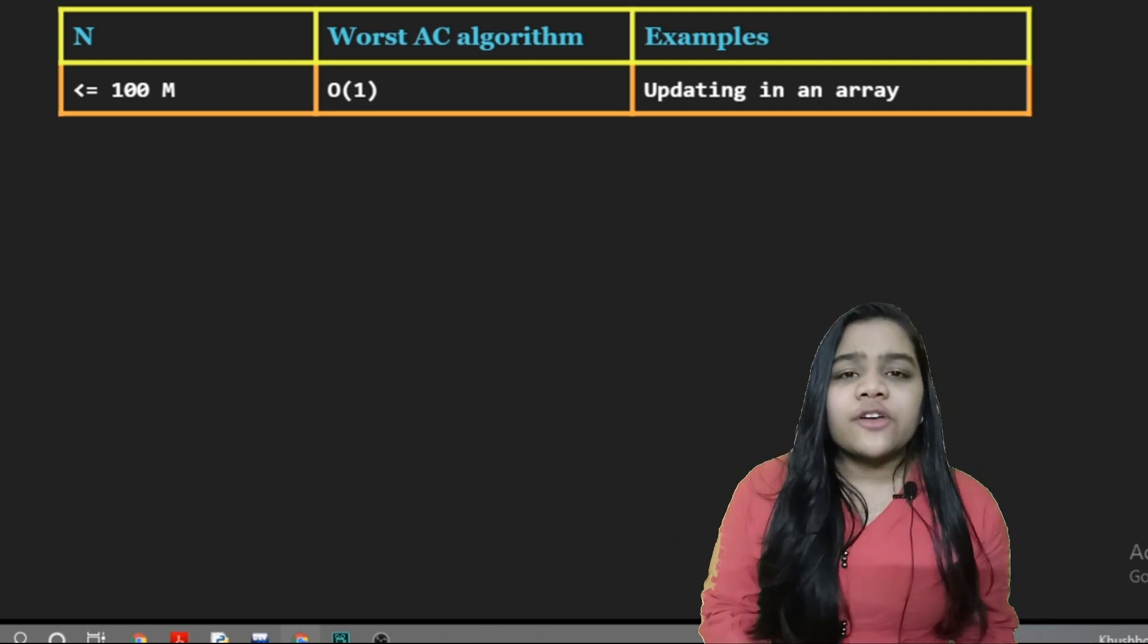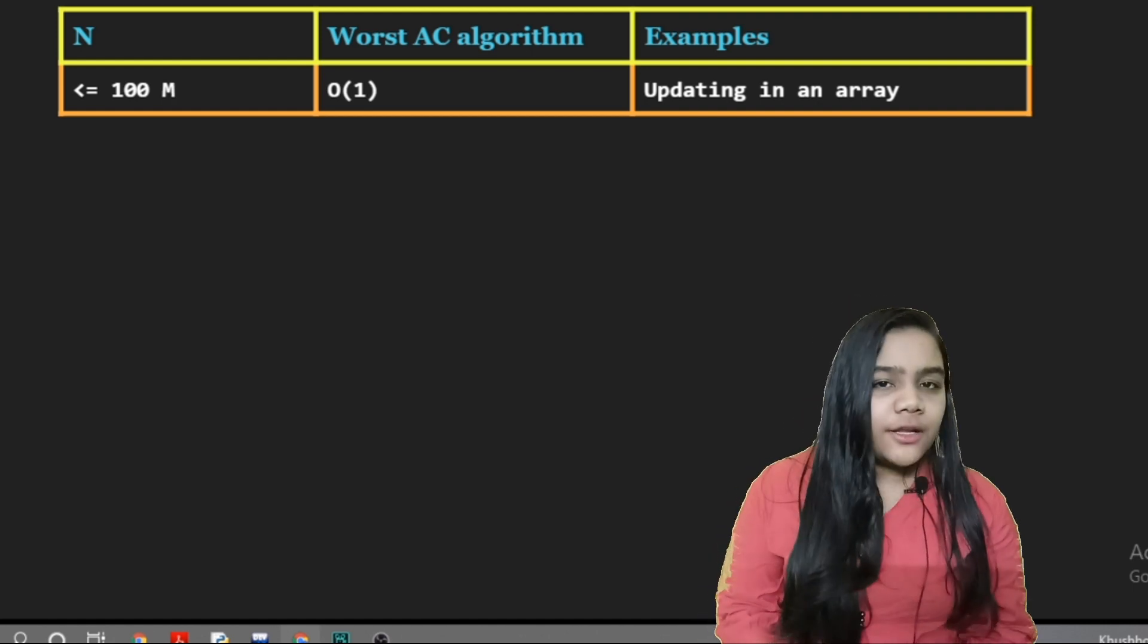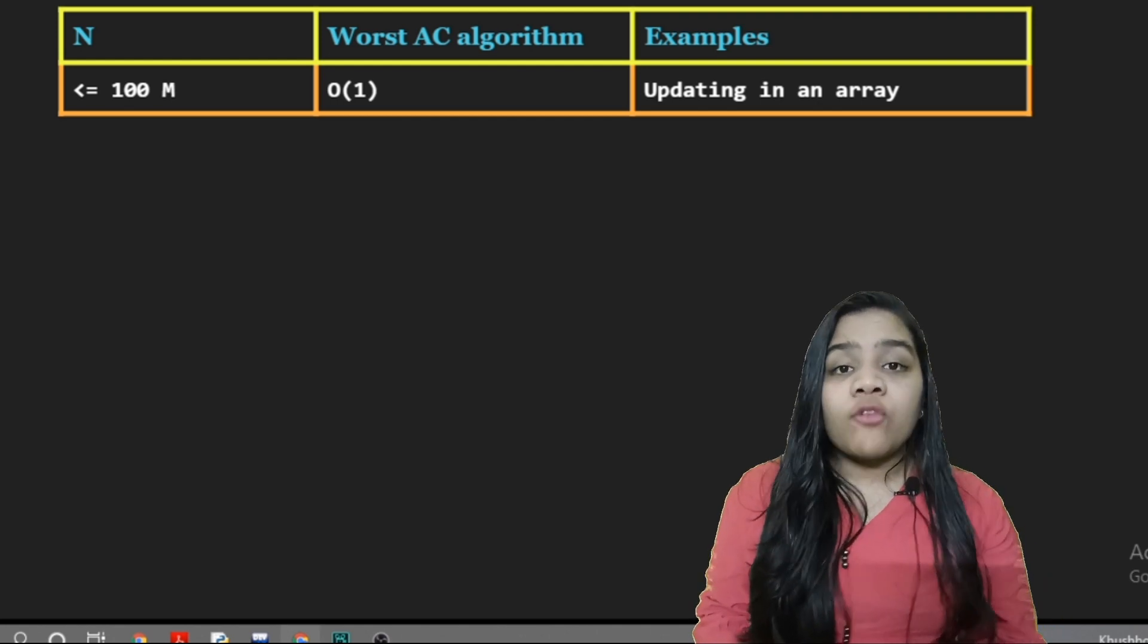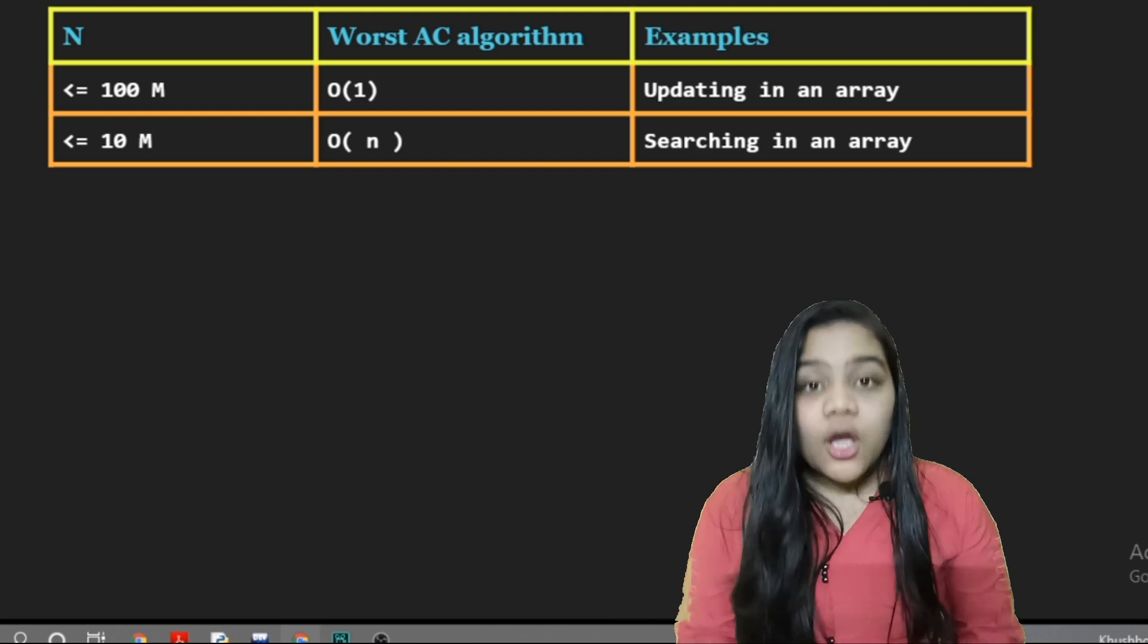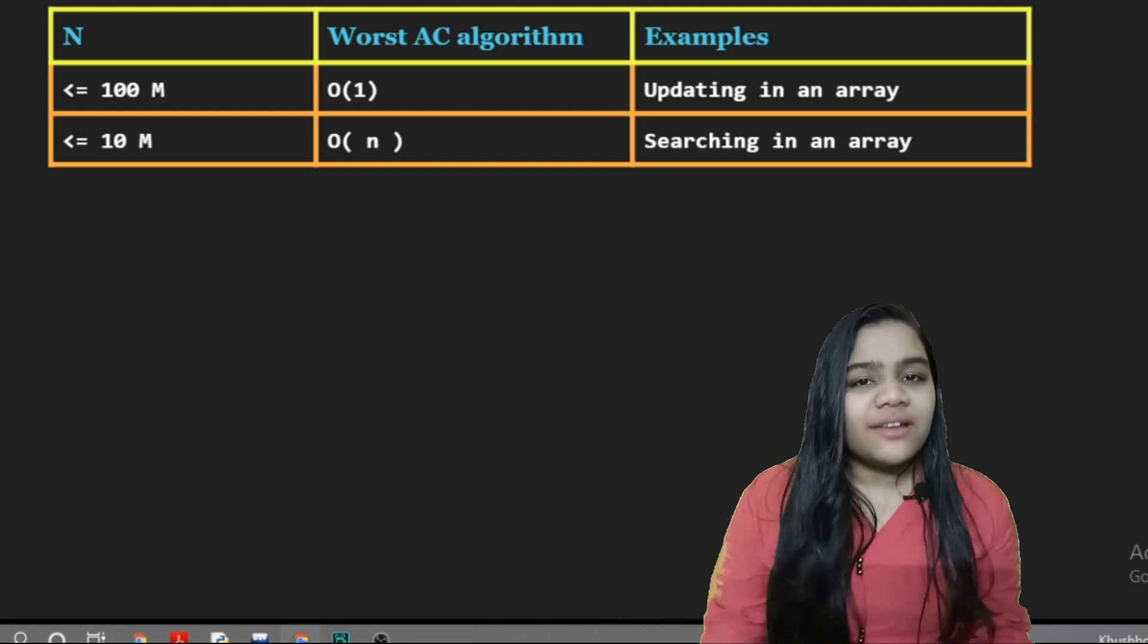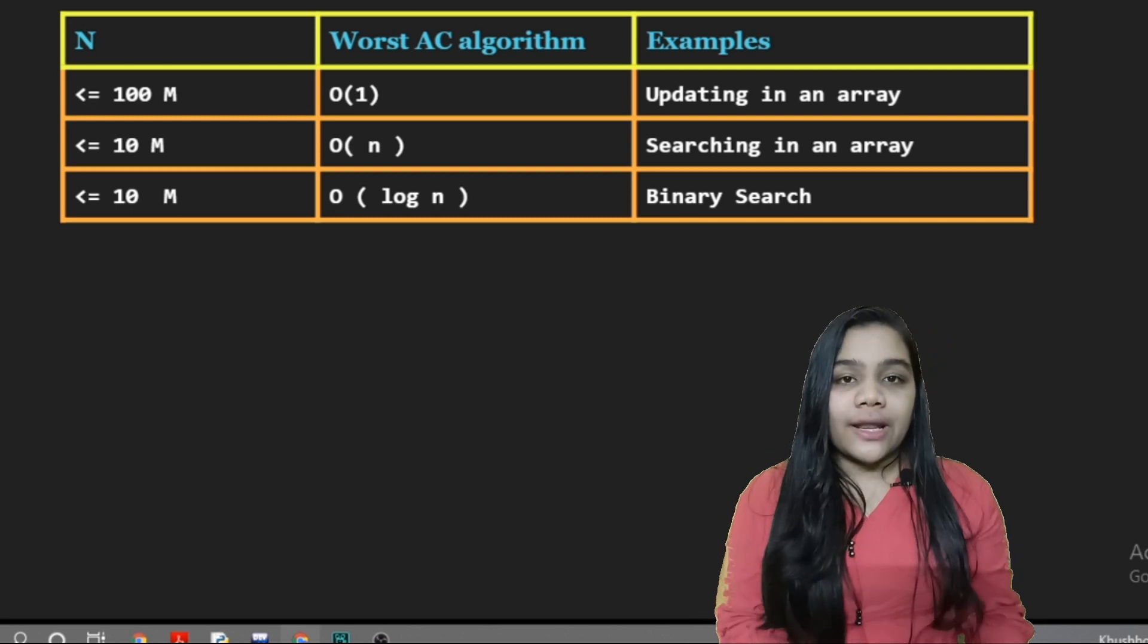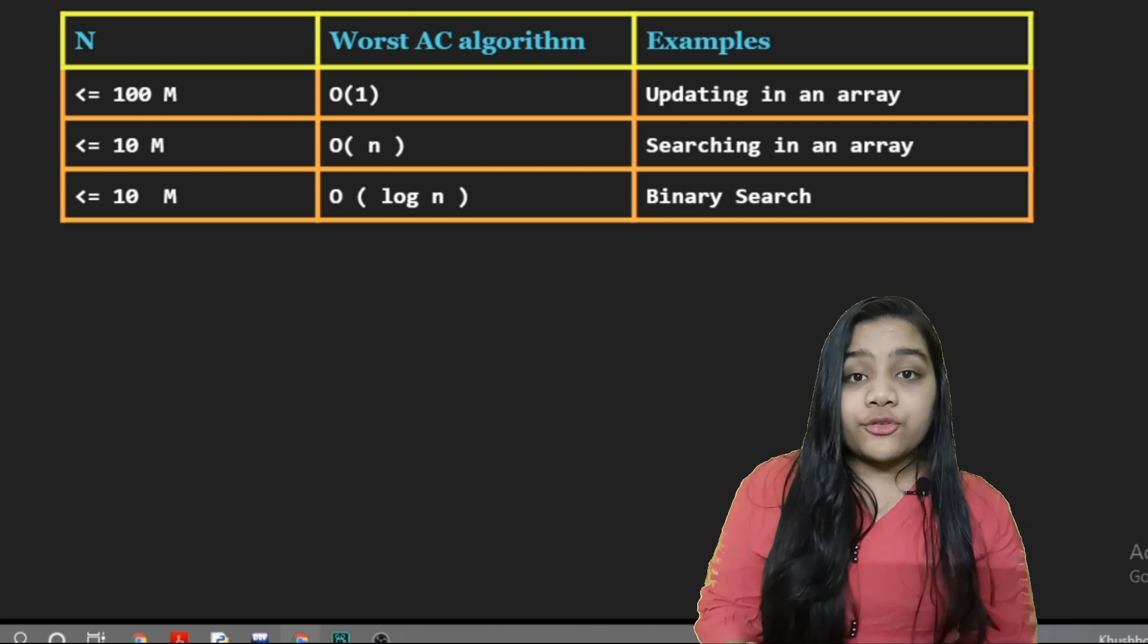So let's suppose we have the input range up to 10 million or 100 million. So which complexity can we use? We can do it in O(1), obviously the constant time complexity like updating an array. Or we can do it in O(n) like searching an array. Or we can do it in log n like any binary search.